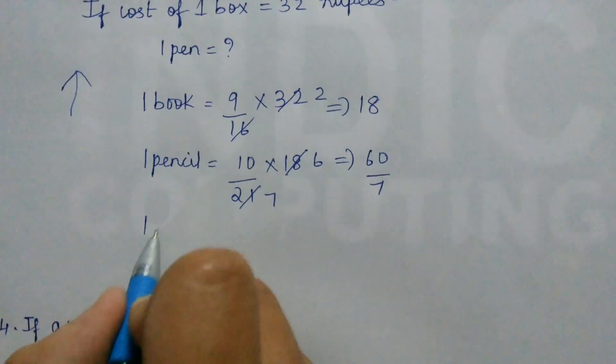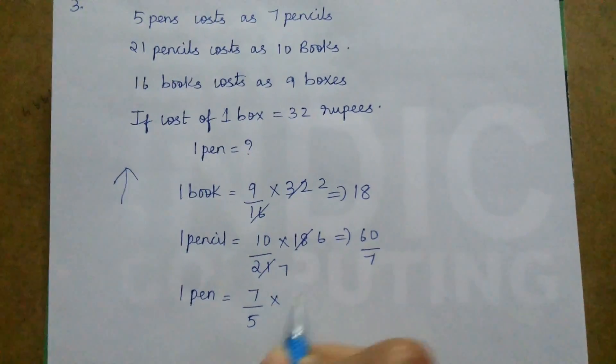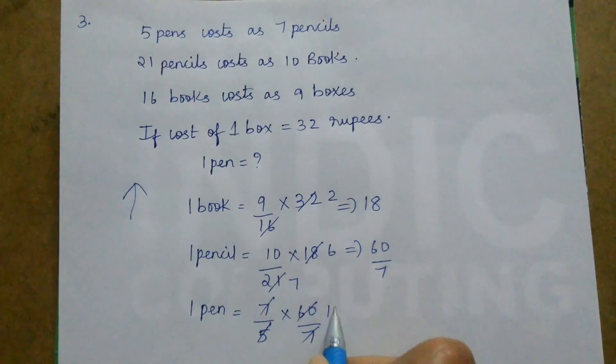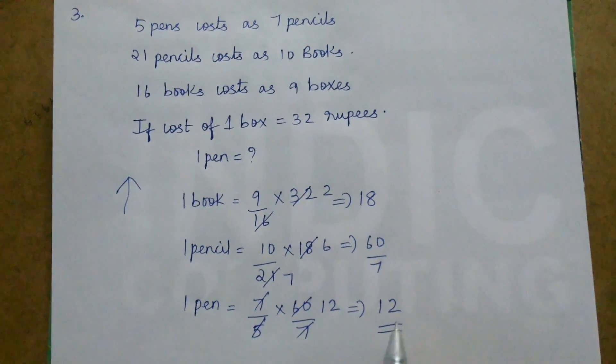Now 1 pen is equal to 7 by 5 times of number of pencils, that is 60 by 7. 7 7 get cancelled. 5 1s are 5, 5 12s are 60. So 1 pen, the cost of 1 pen is 12.